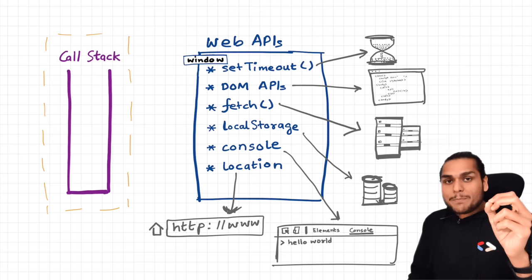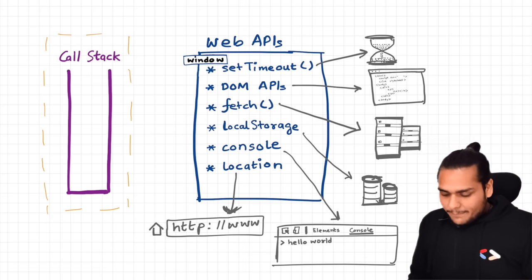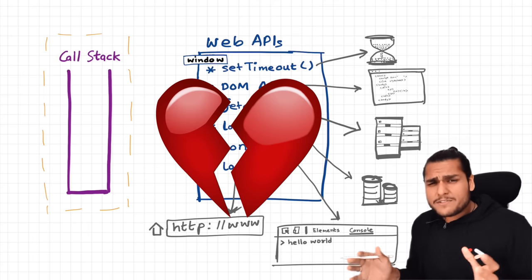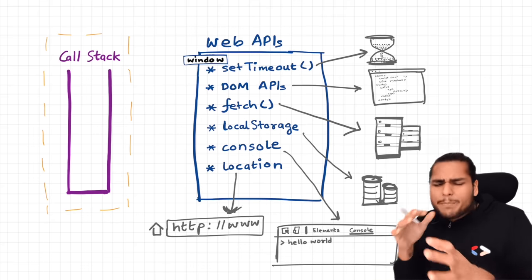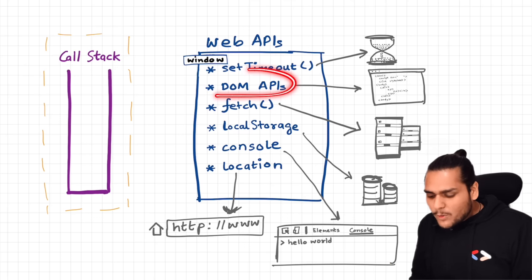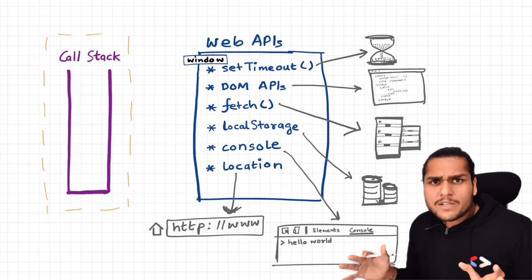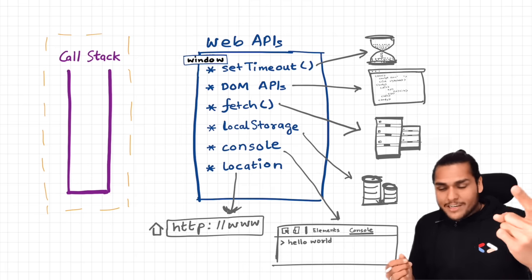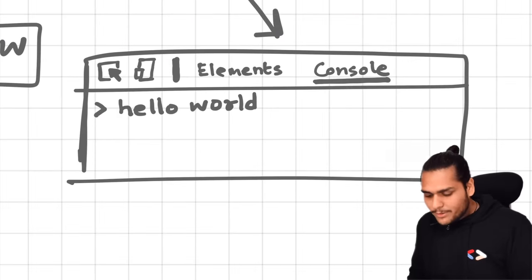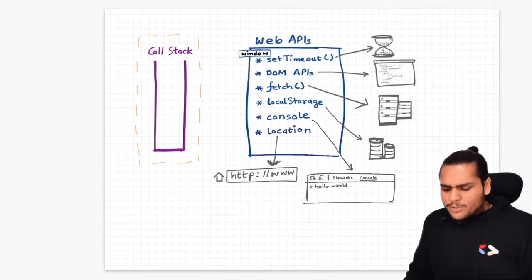To access all those superpowers, we need web APIs. Some of these web APIs include setTimeout — and it will be a heartbreak to a lot of JS developers when I tell you that setTimeout is not a part of JavaScript. I repeat, setTimeout is not a part of JavaScript. Even the DOM APIs — document.getElementById or whatever you do — is not a part of JavaScript. Fetch is not JavaScript, localStorage is not JavaScript. Even console.log that you do in the browser — that is also not a part of JavaScript.